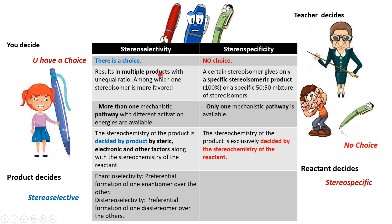In selectivity, out of multiple products, one is formed in a major amount and one is formed in a minor amount. Whereas in a stereospecific reaction, because the reactant decides the stereochemistry of the product, it is always 100% of a particular stereoisomer or 50-50, that is a racemic mixture.